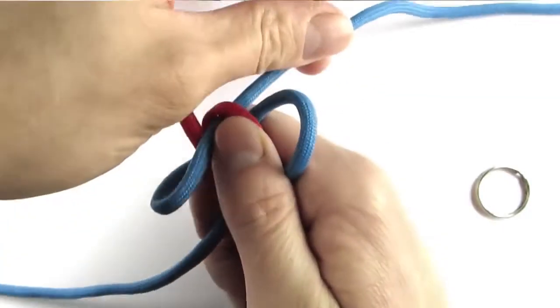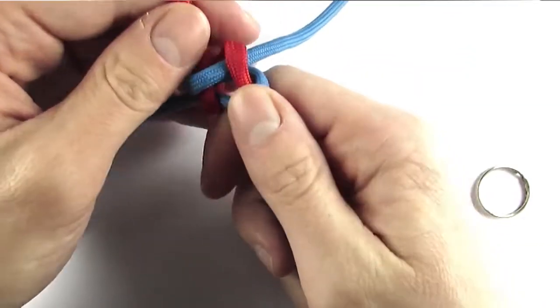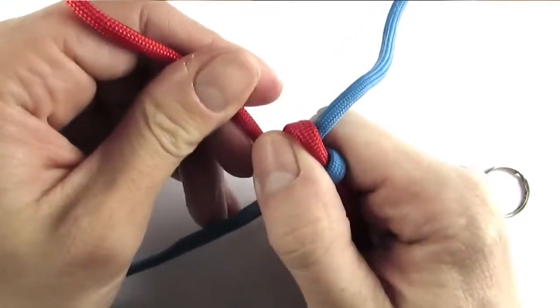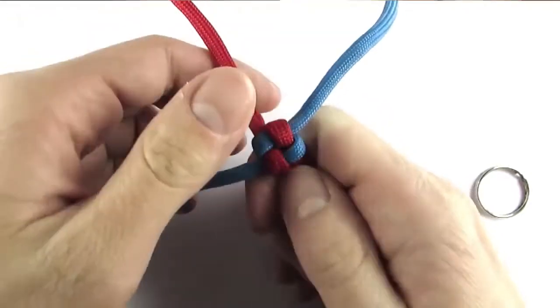We will now tighten the knot by pulling on each of the cords, and this gives us the first box knot.